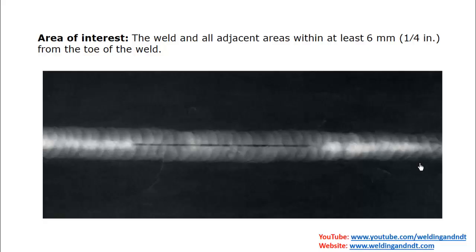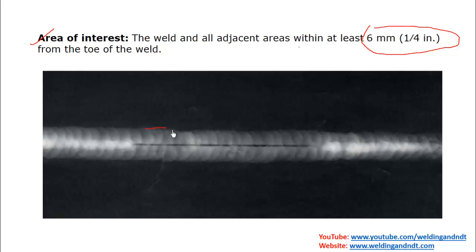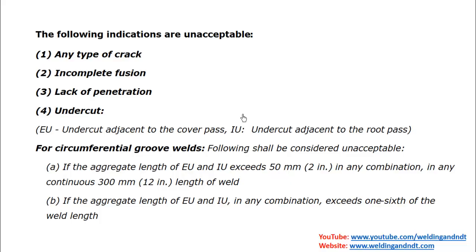Before radiographic interpretation, you need to know the area of interest — meaning up to what area you have to examine on the radiographic film. You have to see the weld joint, and along with that, at least 6 mm from the toe of the weld on each side. So 6 mm from the toe on this side and 6 mm from the toe on the other side — these are the minimum areas you must examine.